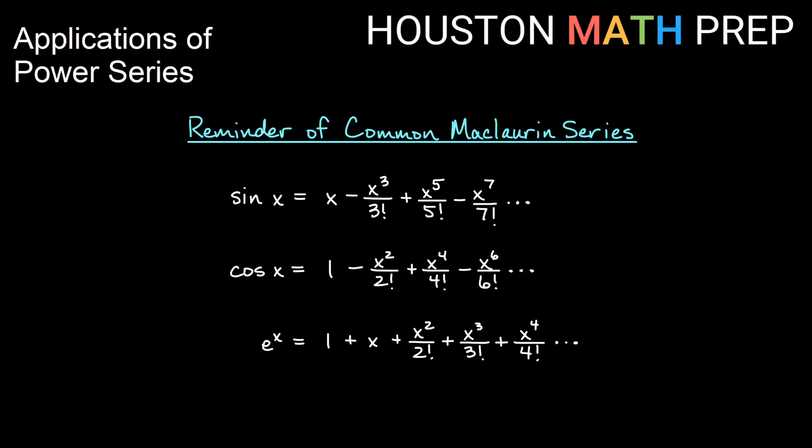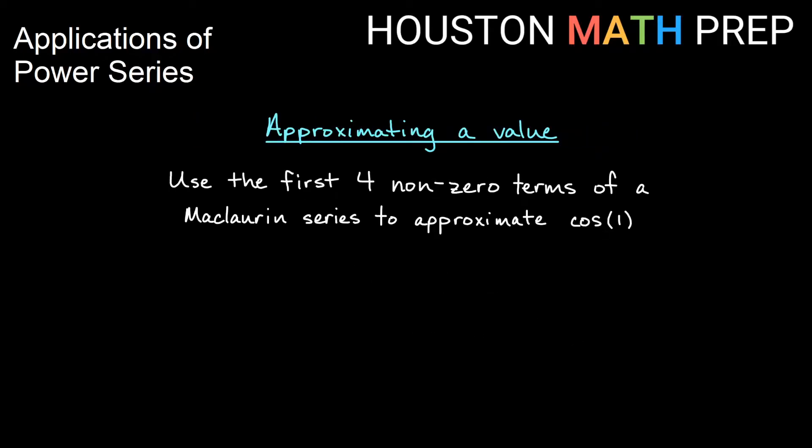So if you need to take a quick mental snapshot of these, go ahead and do that right now. First we're just going to approximate a value. We're going to use the first four non-zero terms of the McLaurin series to approximate cosine of one.